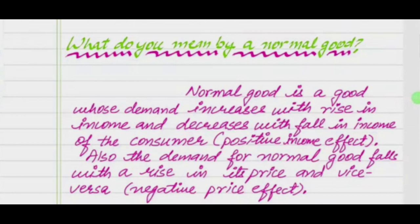Normal good is a good whose demand increases with rise in income and decreases with fall in income of the consumer. This is the positive income effect. Also, the demand for normal good falls with a rise in its price and vice versa. This is the negative price effect.